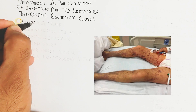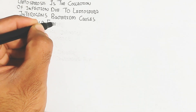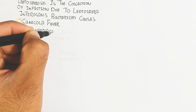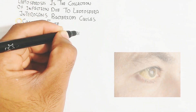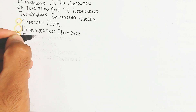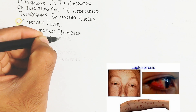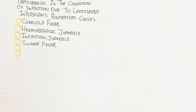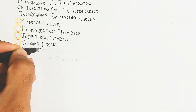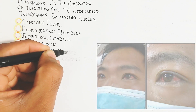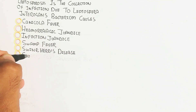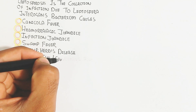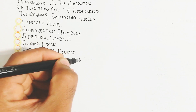For example, canicola fever causes skin damage and hemorrhagic jaundice. Jaundice means the yellowish eye color due to bilirubin metabolism — bilirubin increases in the blood circulatory system. Swamp fever can occur in animals as well as humans. Swine hurts disease shows a bluish color of eyes due to rupture of the endothelial and dysfunction of the capillary. There is also cavers flu and Weil's disease.